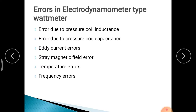Errors in the Dynamometer type Wattmeter: First, error due to pressure coil inductance — the coil has inductance causing lagging of current behind applied voltage, resulting in error. If capacitance is present, current will lead the applied voltage, also causing error. Next, eddy currents are introduced where metallic parts are present, and their interaction with the instrument current causes error in readings.